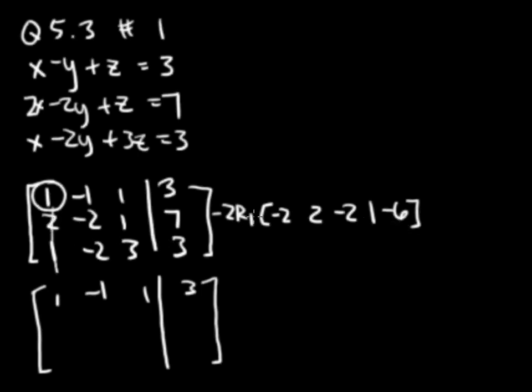So now I add side by side. 2 and negative 2 is 0. Negative 2 and 2 is 0. 1 and negative 2 is negative 1. 7 and negative 6 is 1.